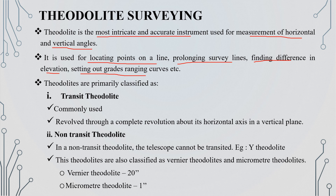Theodolites are two types: transit theodolites and non-transit theodolites. The transit theodolite is commonly used. The transit theodolite can rotate completely about its horizontal axis.